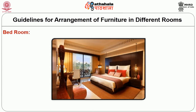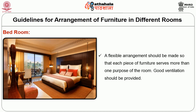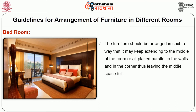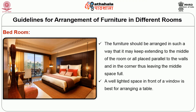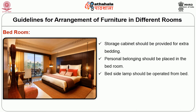Bedroom: Location of doors and windows restrict bedroom furniture arrangement. Arrange furniture for convenience with a centre of interest. A flexible arrangement should be made so that each piece of furniture serves more than one purpose. Good ventilation should be provided. Furniture may extend to the middle of the room or be placed parallel to the walls and in corners, leaving the middle space free. A well-lit space in front of a window is best for arranging a table. Storage cabinets should be provided for extra bedding, personal belongings should be placed in the bedroom, a bedside lamp should be operable from bed, and furniture for reading and writing can be placed here.